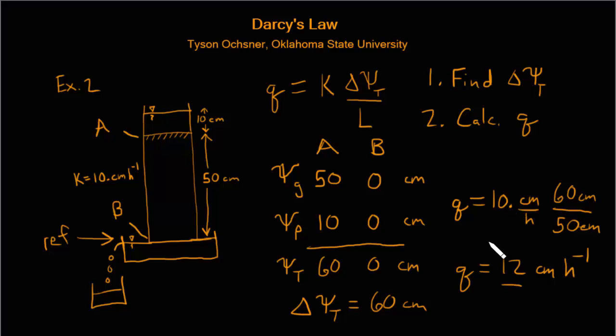We'll report it with two significant figures here because we've specified our conductivity as having two significant figures, shown by this period here, and we'll assume these measurements are two significant figures as well. So we get a flux of 12 centimeters per hour. And that's how you use Darcy's law to calculate water flow through a vertical saturated soil column.